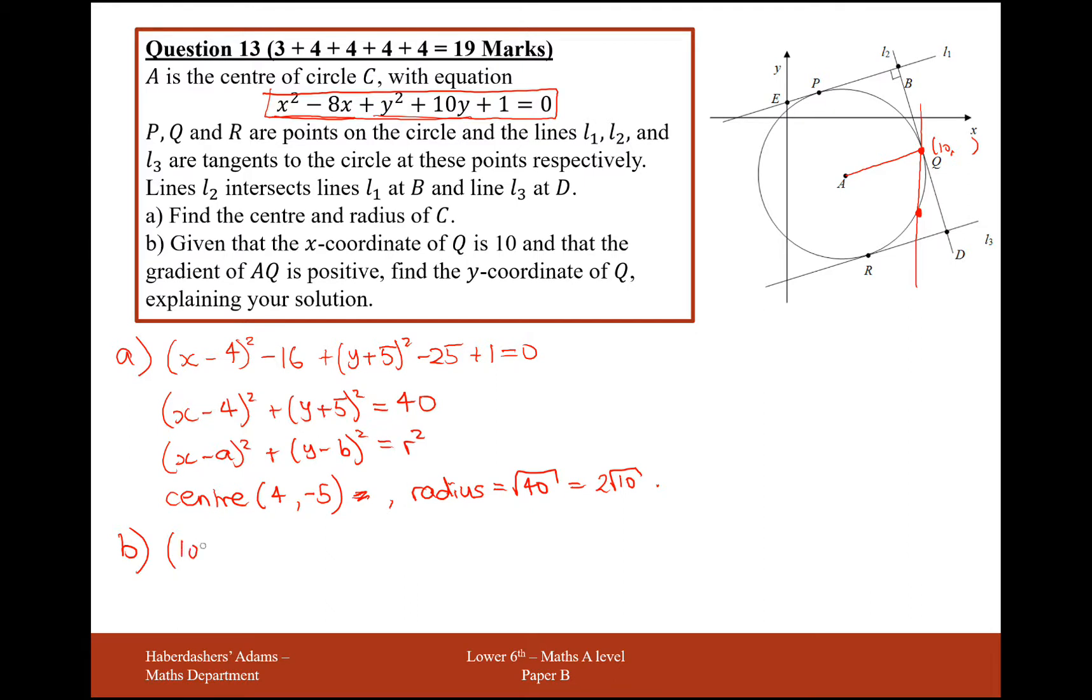So plug in x equals 10 because that was the 10 coordinate. So 10 minus 4 squared plus y plus 5 squared equals 40. Now let's do a few bits of maths here. So 10 take away 4 is 6, 6 squared is 36, 40 take away 36, and we're left with the number 4.